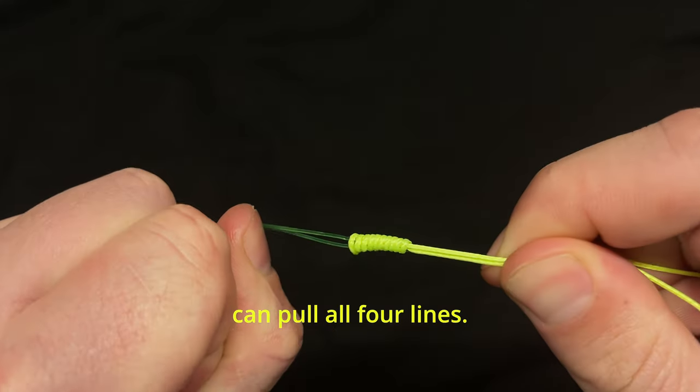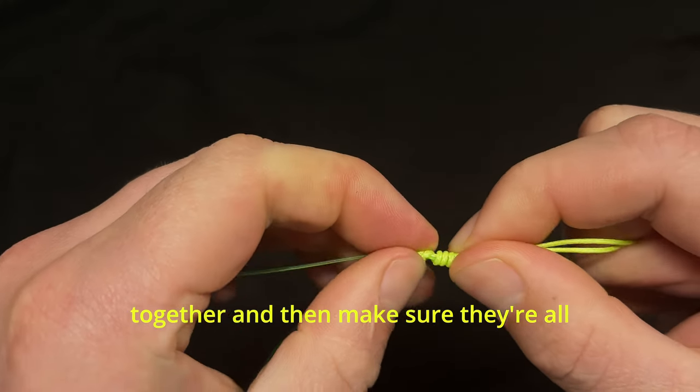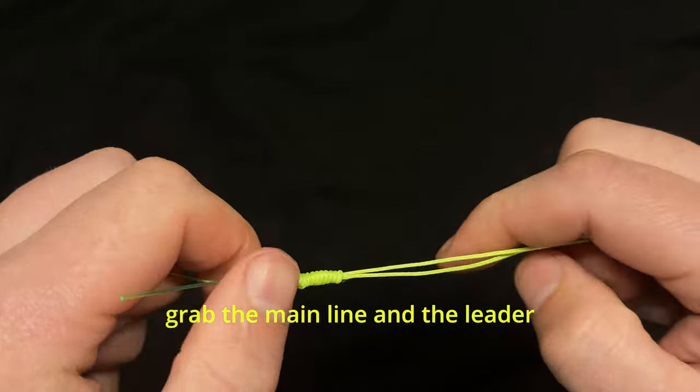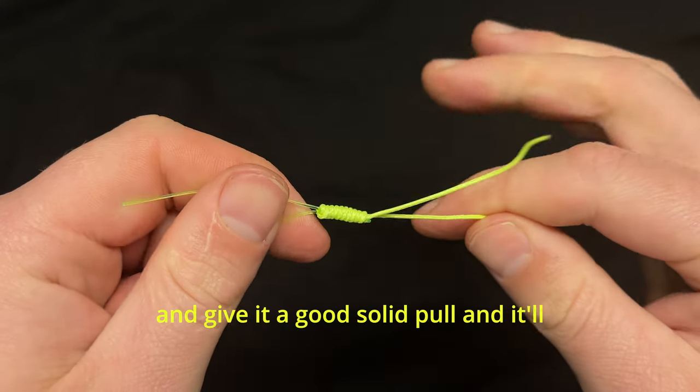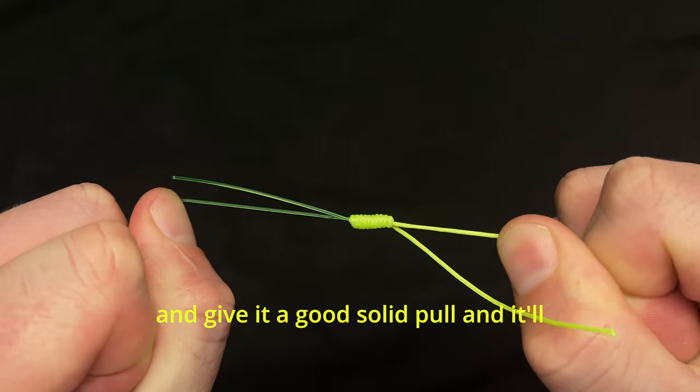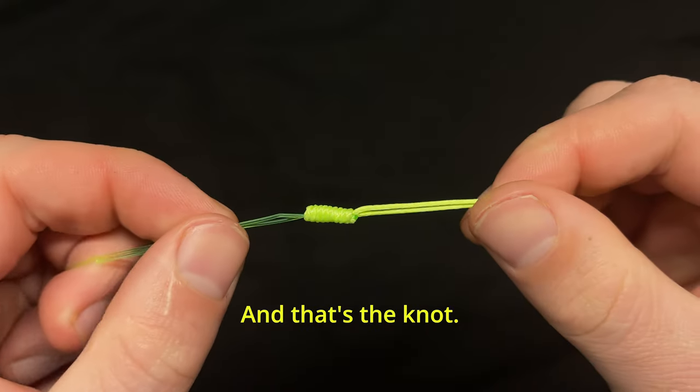Once the line is wet I can pull all four lines together and then make sure they're all in line. Then I can just grab the main line and the leader and give it a good solid pull and it'll cinch down on itself. And that's the knot.